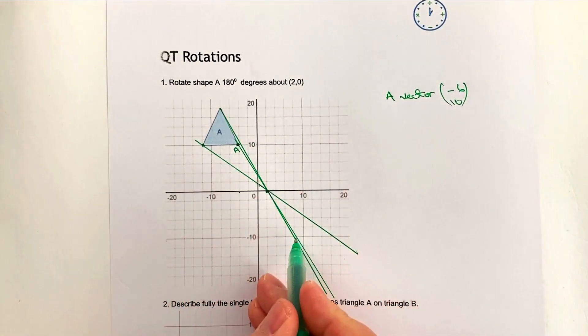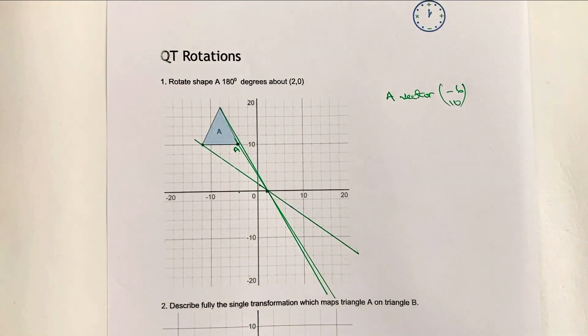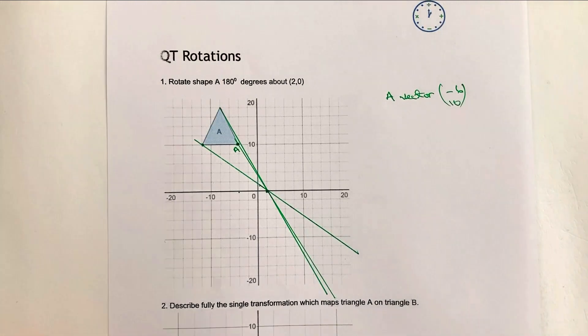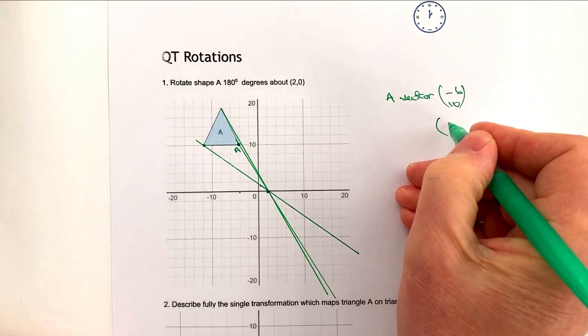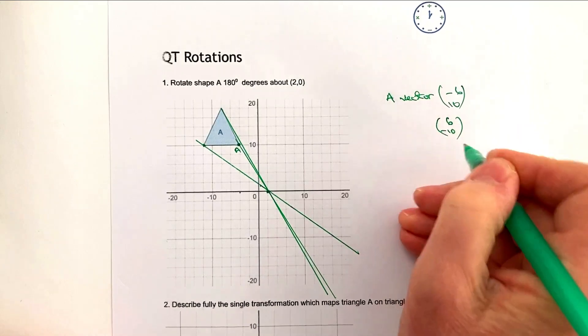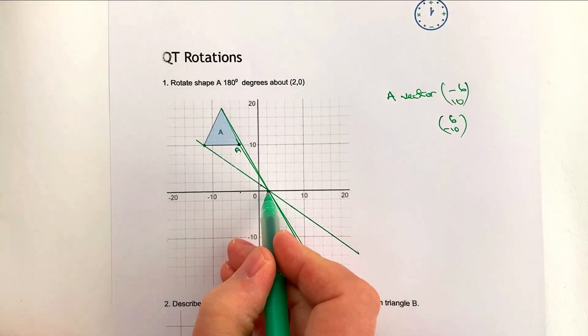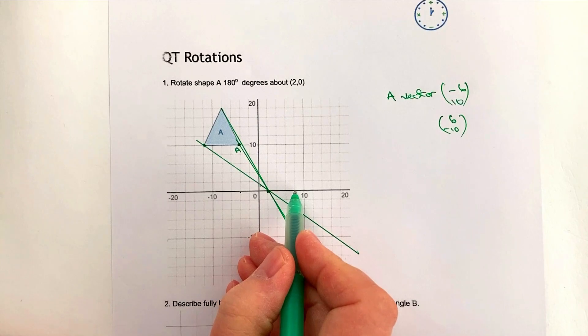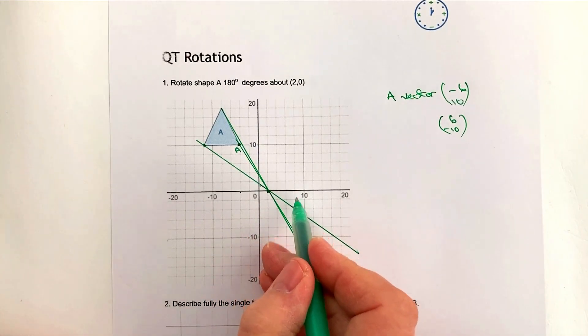Well if we're going to rotate it 180 degrees, then what we're actually going to do is the opposite. We're going to have a vector now of 6 and minus 10. So in other words, if we go along 6, so 2, 4, 6, and then down to minus 10...